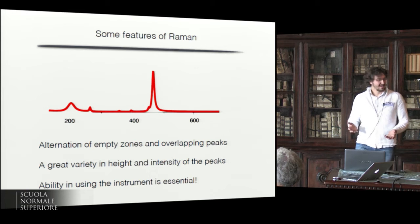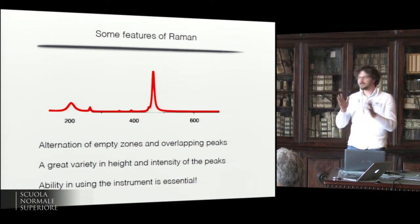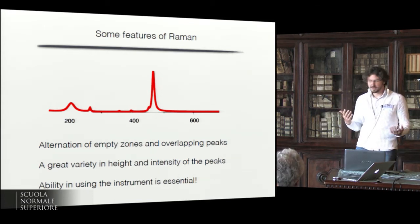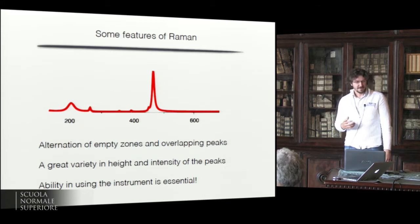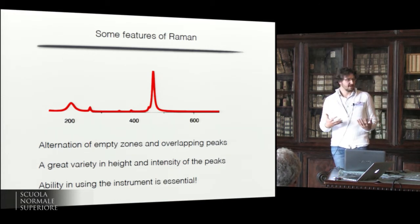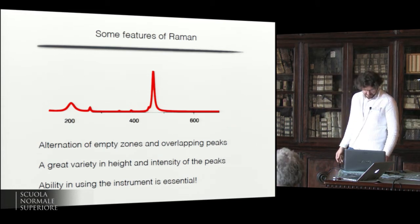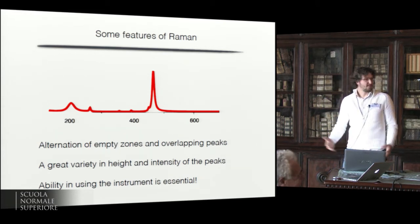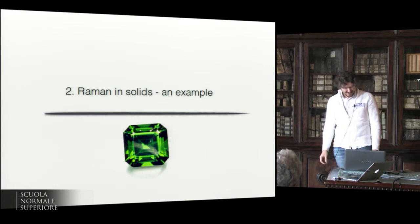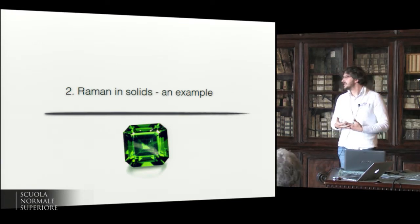The Raman spectrum has more or less the same features: an alternation of very empty zones and very clustered peaks, and a great variety. It is an experimental technique that can measure up to five orders of magnitude in the intensity of peaks. The ability of the person making the measurement and the quality of the instrumental setup is critical in retrieving good information from the spectra. So why is Raman spectroscopy of solids pretty interesting?